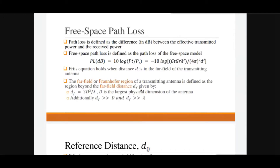Next is the equation for free space path loss. Path loss is defined as the difference between the effective transmitted power and the received power. The free space path loss in decibels is: 10·log(Pt / Pr), which from the Friis equation can be described as: −10·log(Gt·Gr·λ² / (4π)²·d²).